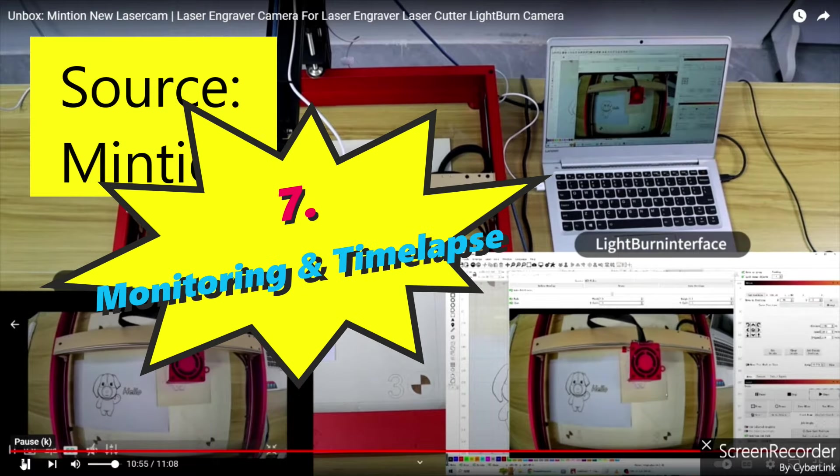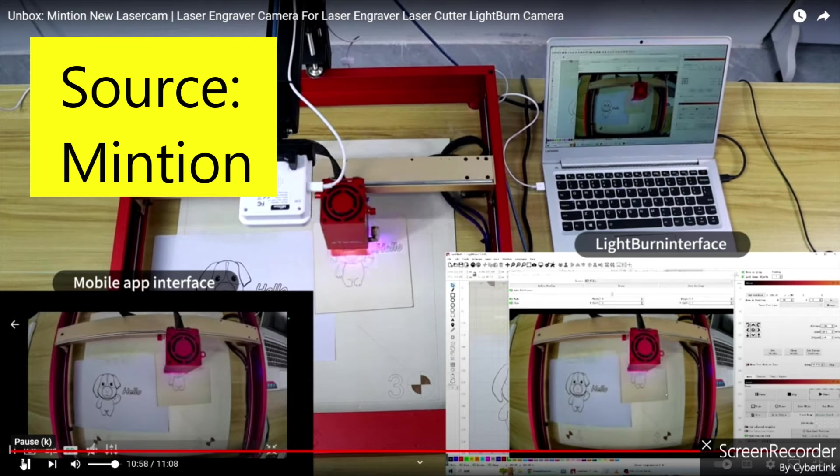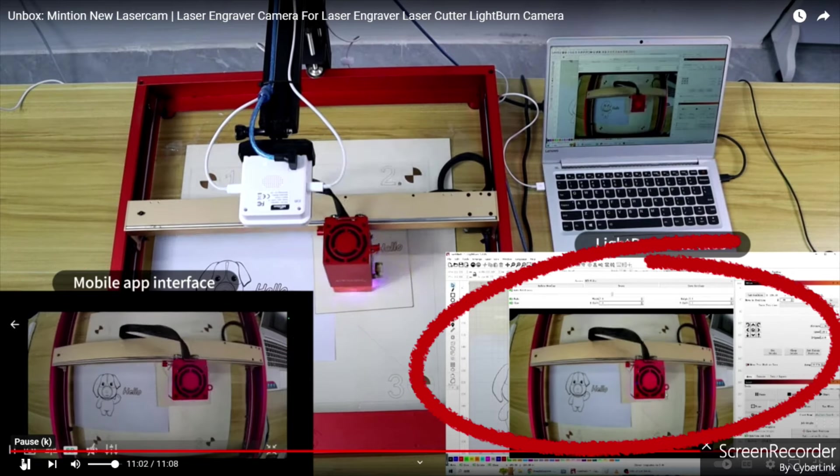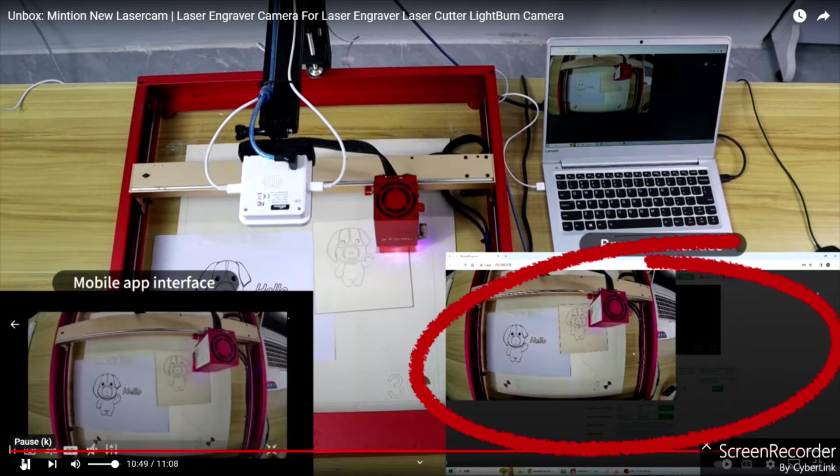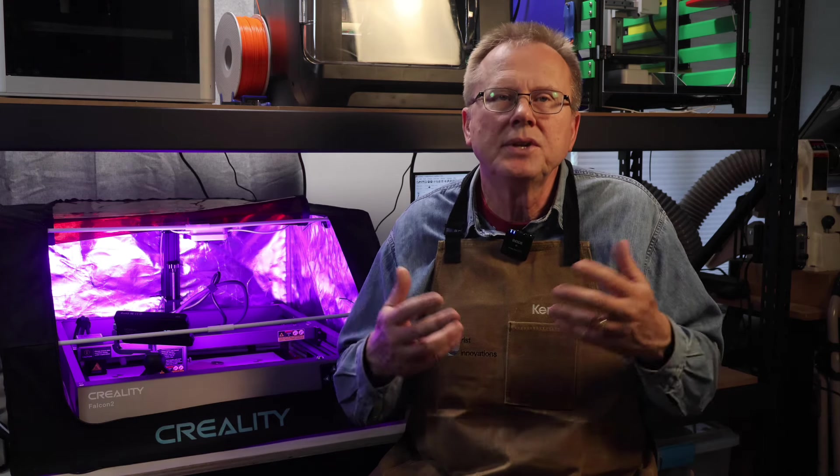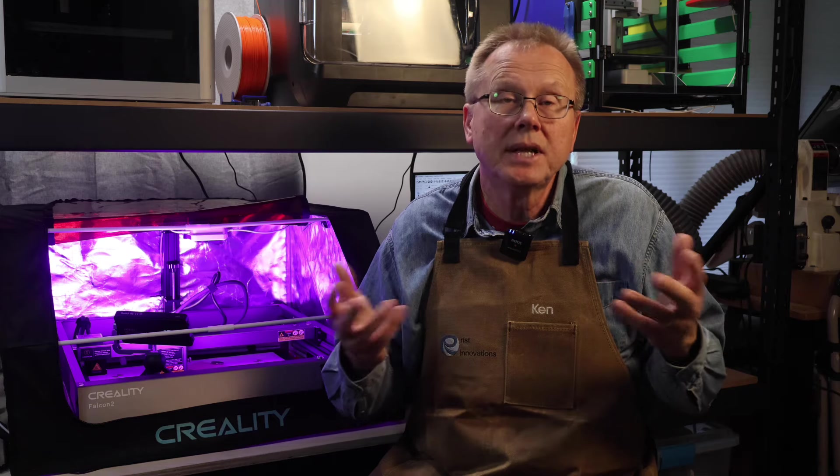You can monitor the live engraving of your workpiece via either the Beagle Engrave app on your phone, via Lightburn camera interface, or by the browser interface. You still need to be in the same room as the laser in case there is an emergency and you need to immediately shut down the laser.